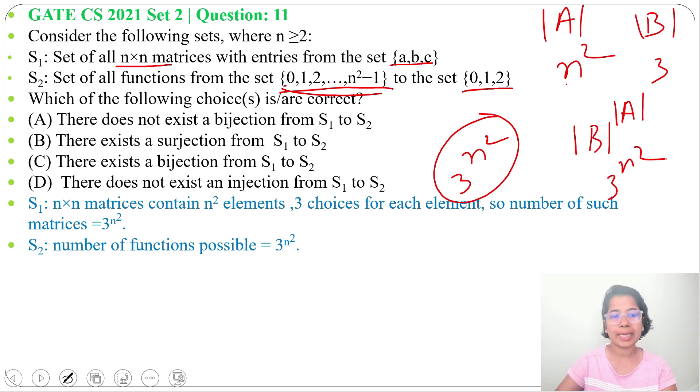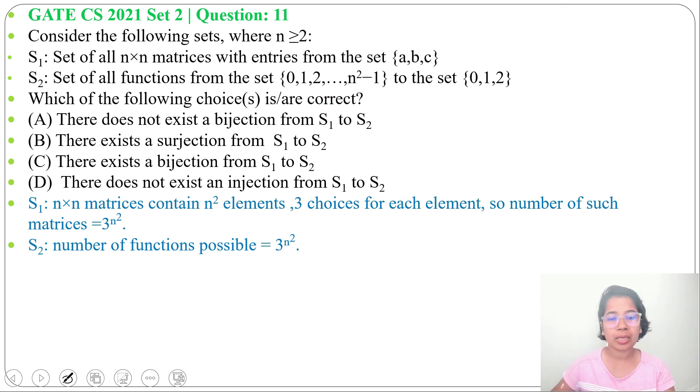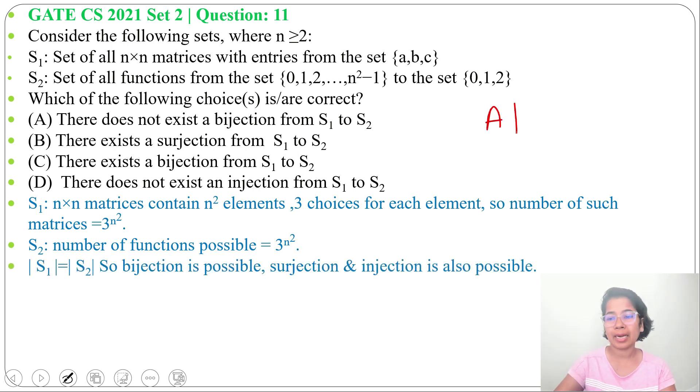Both cardinalities are the same. In S₁ and S₂, both contain 3^(n²). So as both are the same, bijection is possible. If |A| equals |B|, then bijection is possible.